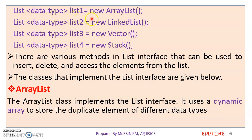List1 is equal to new ArrayList of List data type. List2 is equal to new LinkedList. Here we are also going to use Vector with new Vector, and Stack with new Stack. Here we are going to instantiate these objects. This list is created.